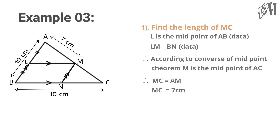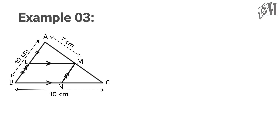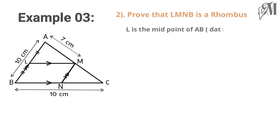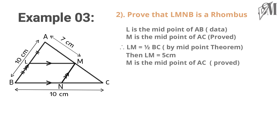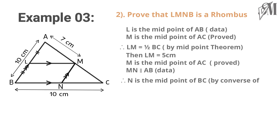Therefore MC is equal to AM, and we can find MC is equal to 7 centimeters since AM is equal to 7 centimeters. Next we are going to prove LMNB is a rhombus. In a rhombus, opposite sides are parallel and adjacent sides are equal. Opposite sides are already given as parallel, so we need to show adjacent sides are equal. Since L is the midpoint of AB and M is the midpoint of AC, by the midpoint theorem LM is half of BC, so LM equals 5 centimeters. Since M is the midpoint of AC and MN is parallel to AB, by the converse of the midpoint theorem N is the midpoint of BC.